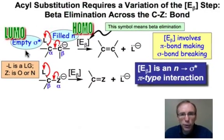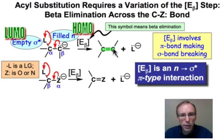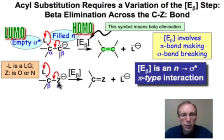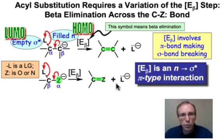Let's return to that fundamental elementary step and examine it in more detail. The beta elimination seen in the E1Cb mechanism involves a lone pair on a carbanion donating into the sigma star of the leaving group in a pi-type fashion to create a new carbon-carbon double bond. E-beta involves pi bond making and sigma bond breaking. Similarly, the variation needed for acyl substitution replaces that lone pair on the carbon with a lone pair on some heteroatom Z, and in the same way there's an N to sigma star pi-type interaction that creates a new pi bond and the leaving group leaves.